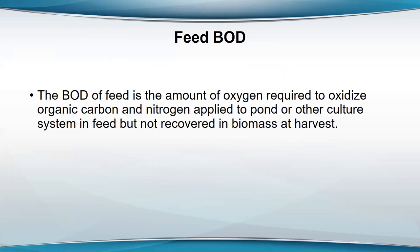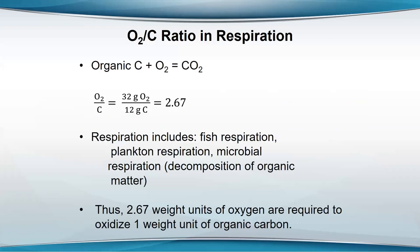You can think of the feed as having a BOD — the amount of oxygen required to oxidize the organic carbon and nitrogen applied to the pond or other culture system, but not recovered in the biomass at harvest. The nitrification bacteria in the pond oxidize ammonia to nitrate, and that takes a lot of oxygen — 4.57 units of oxygen per unit of nitrogen. The organic carbon is converted to CO2, and that takes quite a bit of oxygen as well.